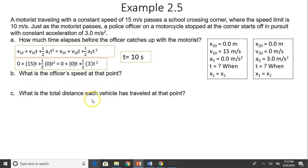Next, what is the officer's speed at that point? V equals V0 plus AT. You already know V0 is 0. You know A and you solved for t. So you should have 30 meters per second.